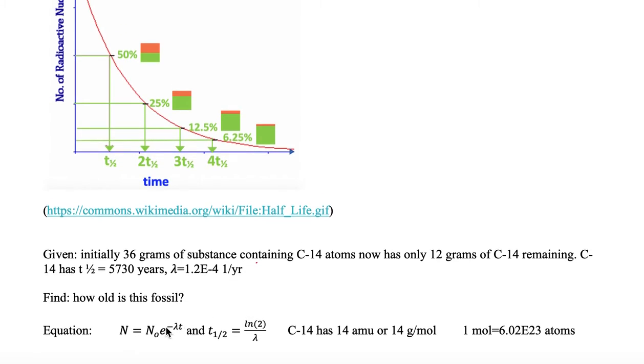We're given two equations. N equals N0 times e to the minus lambda t, where lambda is the decay constant, t is time, N is the final number of radioactive atoms, and N0 is the initial number of radioactive atoms. We're also given the half-life equation, where half-life equals natural log of 2 over the decay constant. We're given that carbon-14 has 14 AMU, or 14 grams per mole, and Avogadro's constant of 1 mole equals 6.02e23 atoms.